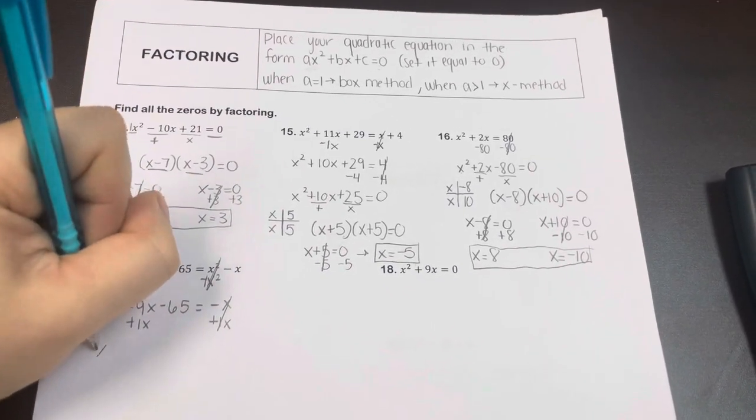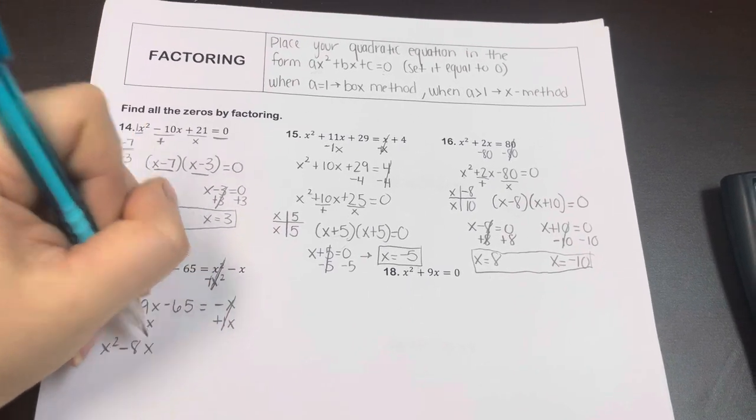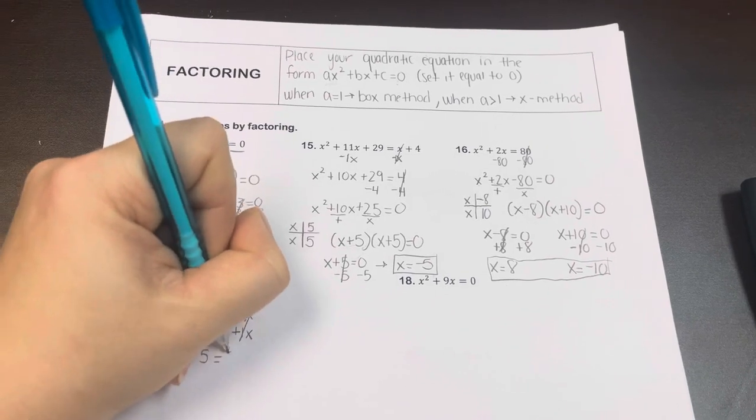And so I have an x squared and then a negative 9x plus a 1x and then a negative 8x, and then minus a 65 is equal to 0.